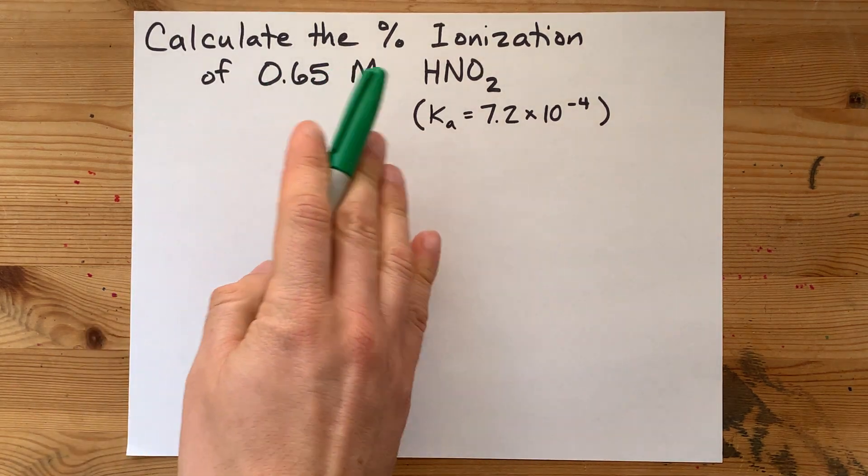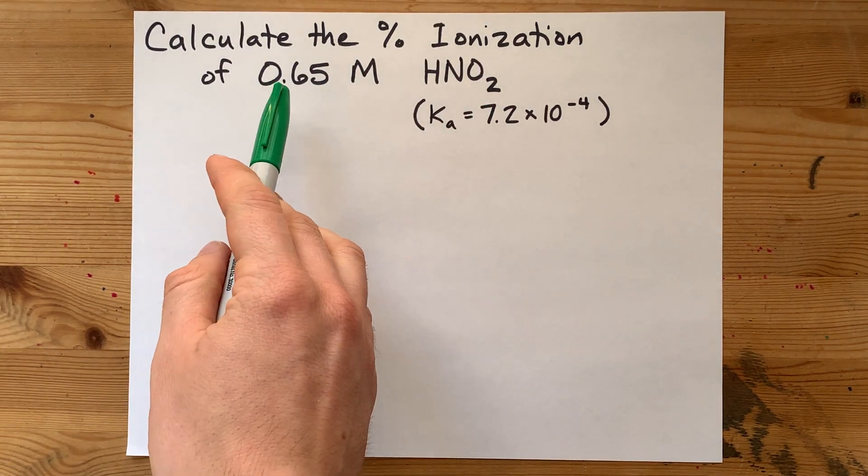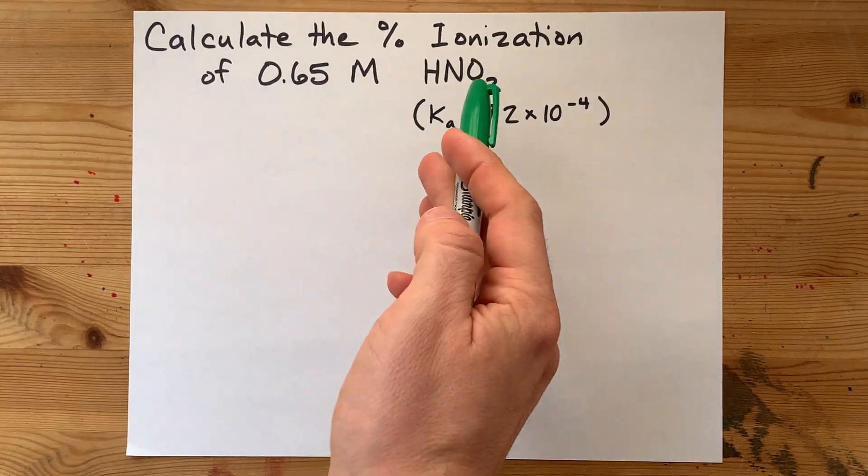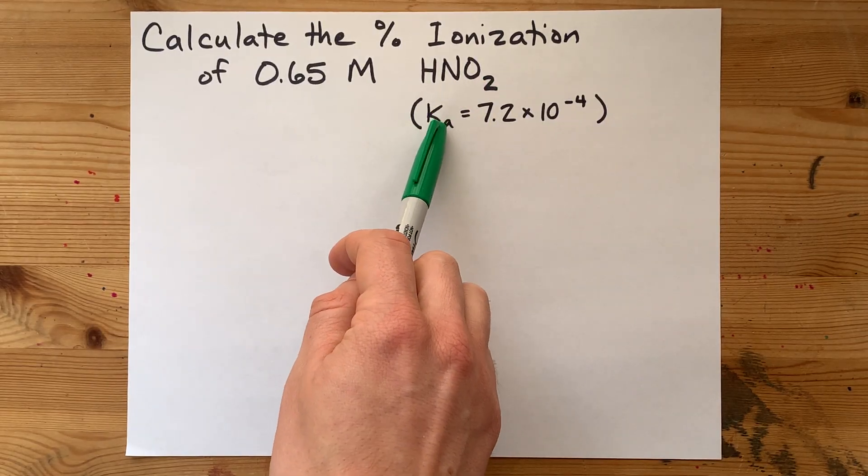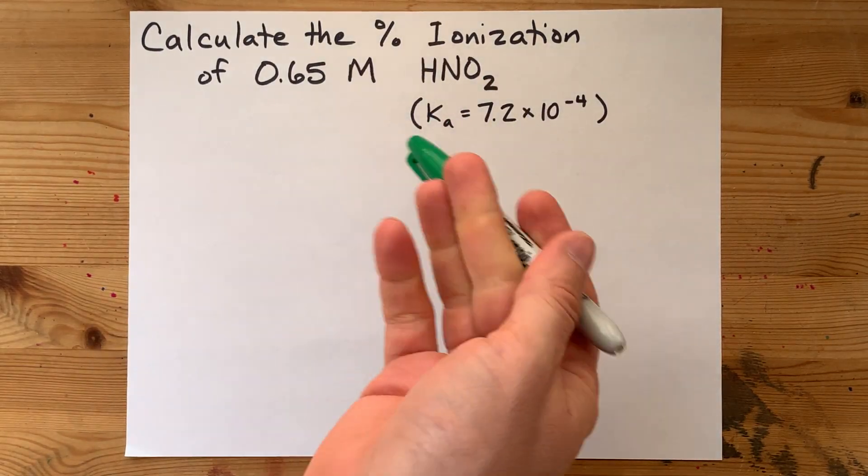We're going to calculate the percent ionization for some concentration of a weak acid. The weak acid will have a Ka of some value.